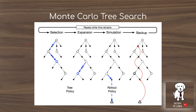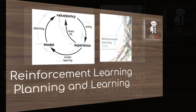Decision-time planning algorithms are only practical depending on how quickly a decision must be made. In chess, with five minutes per move, MCTS can build an exhaustive tree. But for control tasks like cart-pole balancing or bipedal walking, there isn't enough time to run such a search to compute the necessary actions in real time.